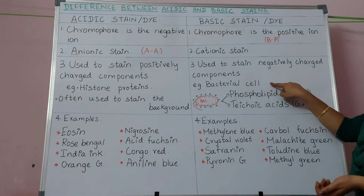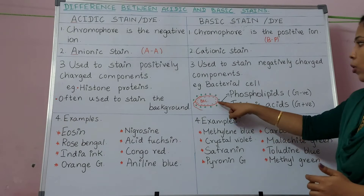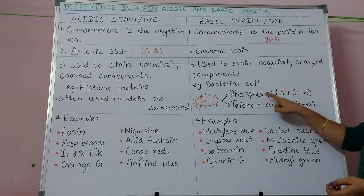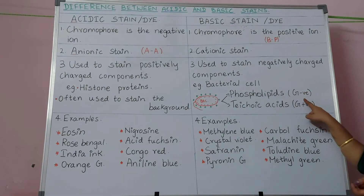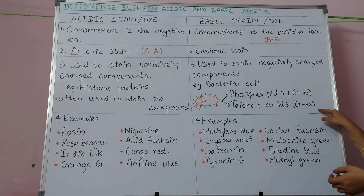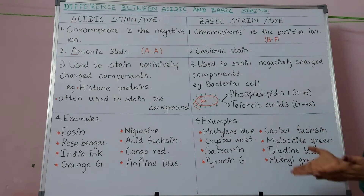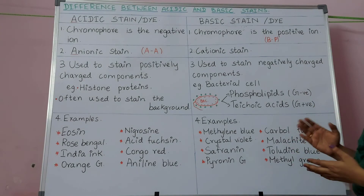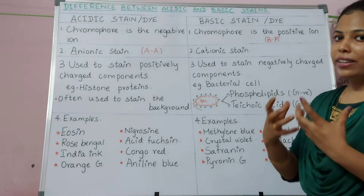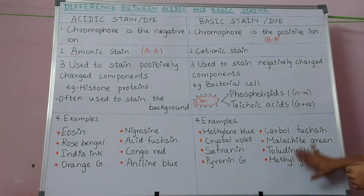In case of basic stain, we can use them to stain negatively charged components — for example, bacterial cells. This is because bacterial cell walls are negatively charged due to the presence of phospholipids in case of gram-negative bacteria, and teichoic acid in case of gram-positive bacteria. These components give the bacterial cell wall a negative charge, and due to this negative charge they bind well to the basic stain.